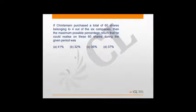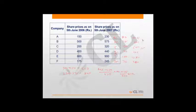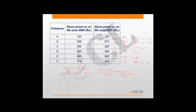Next question: if Chintamani purchased a total of 60 shares belonging to 4 out of the 6 companies, what was the maximum possible percentage return on these 60 shares during the given period? To maximize percentage gain, we look at the highest percentage returns: company C at 60%, then A at 53.3%, then F at 40%, and next highest is B at 15%. We assign minimum shares (10 each) to the three lower-return companies, and allocate the remaining 30 shares to company C.